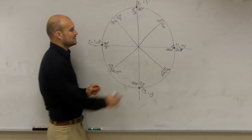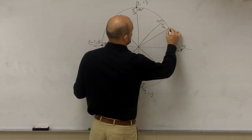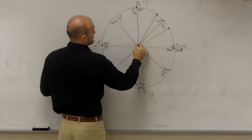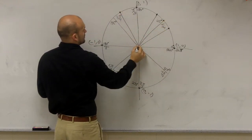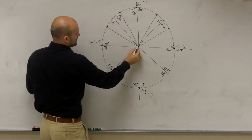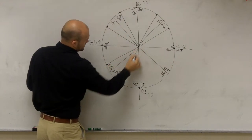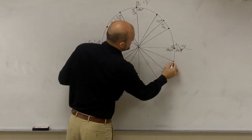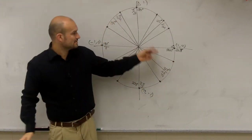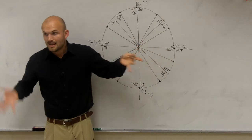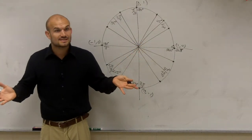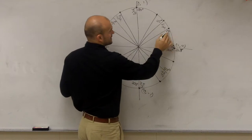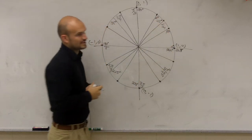Now remember, when we created the unit circle, there were two other angles — this angle and this angle. Before I get to the coordinate points, let's figure out what these angles are. The first triangle we talked about was a 45-45-90, and the next triangle we talked about was a 30-60-90. So that means this first angle is 30 degrees, and then this one is going to be 60 degrees.